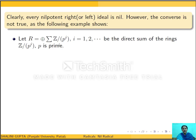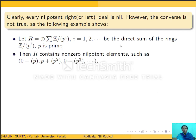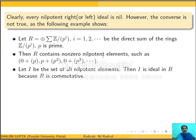Suppose R is the ring given by the infinite direct sum of rings Z mod 2^i, for i = 1, 2, ... Then we consider I to be the set of all nilpotent elements of R. It is easy to see that I is an ideal of R. We will show that I is a nil ideal but I is not nilpotent.